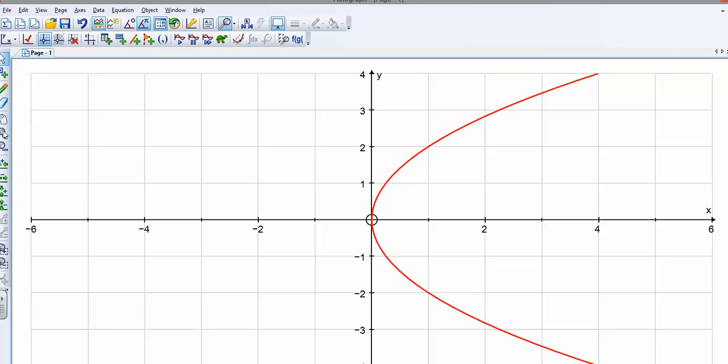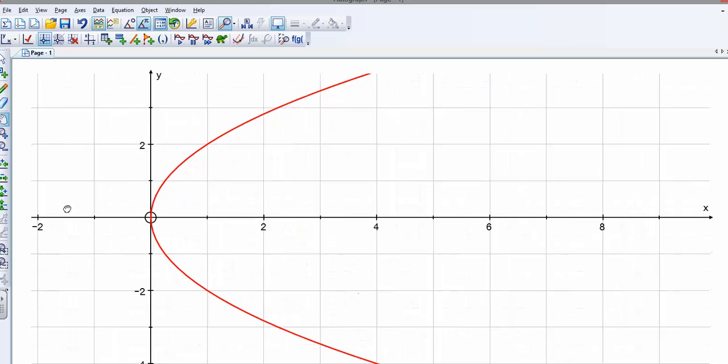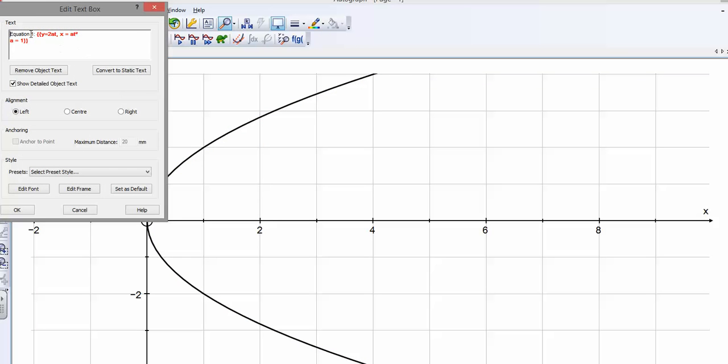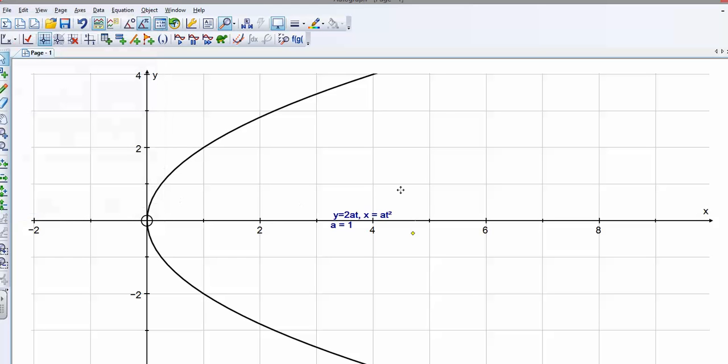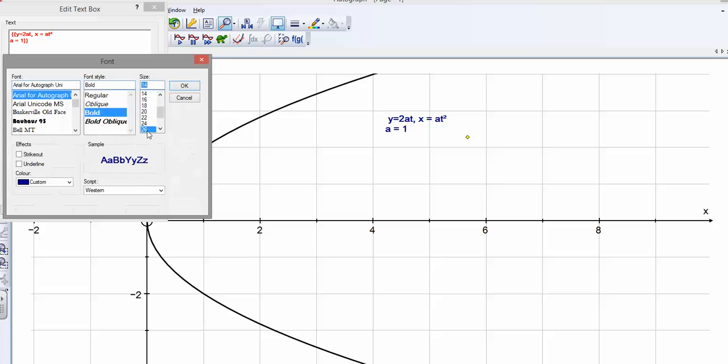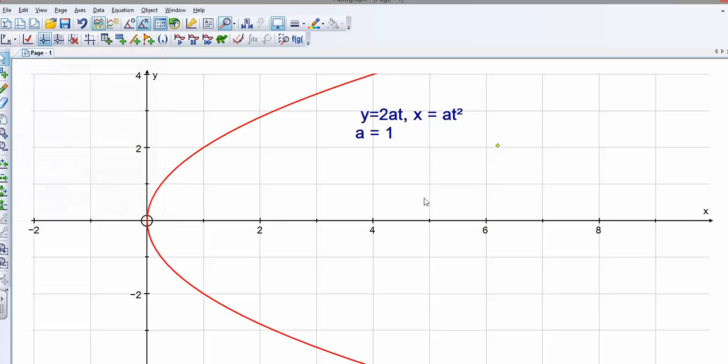Well, we know it looks like a parabola. I'll just bring that over here. And let's label the graph so we can see the equation and we can see what the value of a is. So let's make that a little bit bigger so we can see it a bit more clearly.